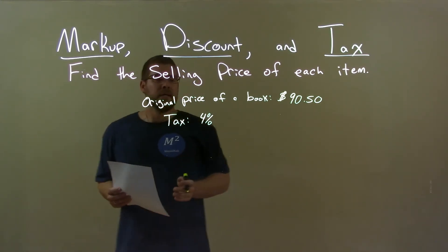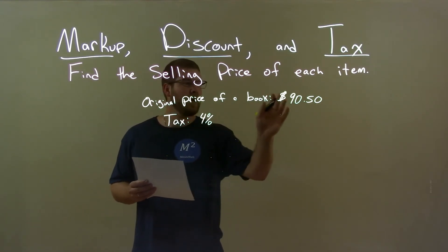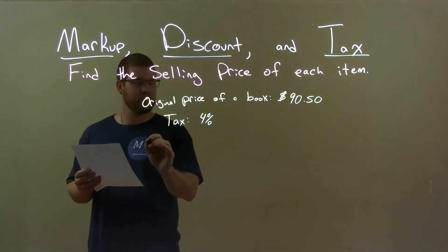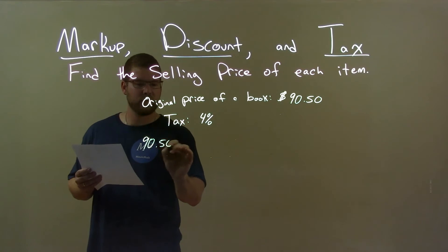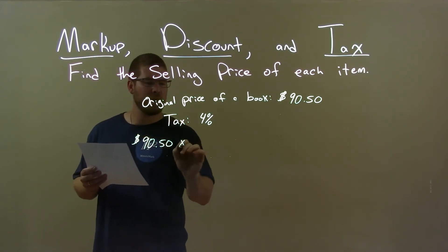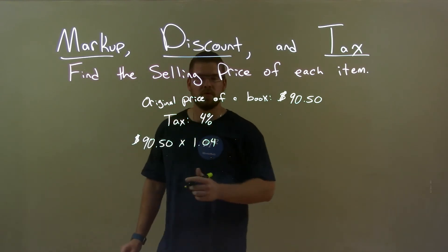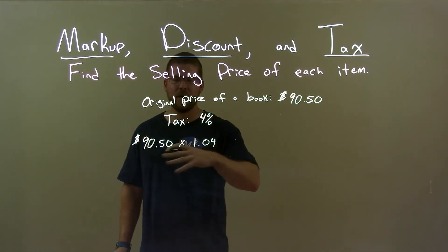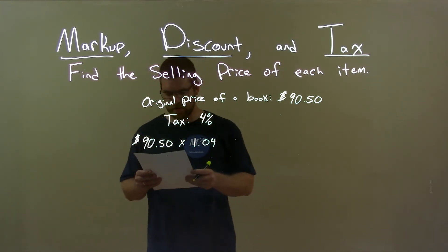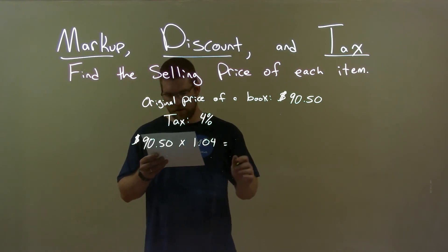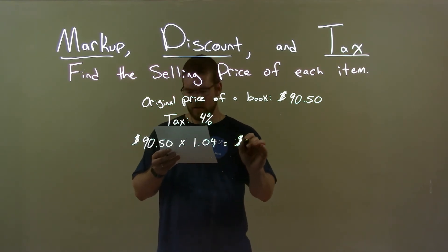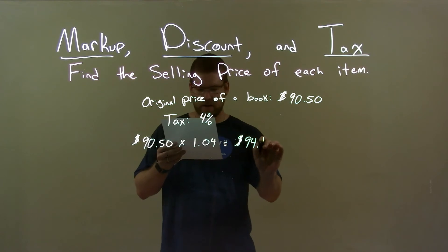Well, what do we do? Well, first thing is, I know we take the $90, right? Take the $90.50 and we multiply that by 1.04. 0.04 represents the 4% and the 1 represents, make sure we keep the initial cost in our calculation. That gives us a final cost after taxes of $94.12.